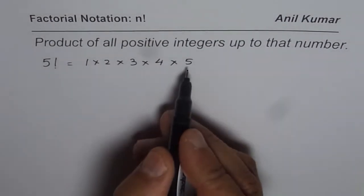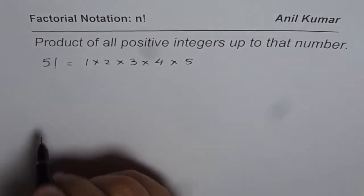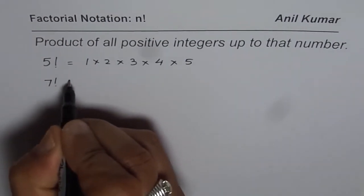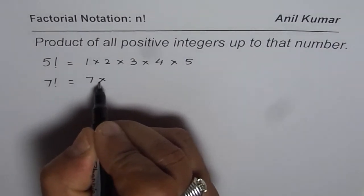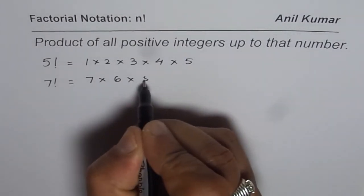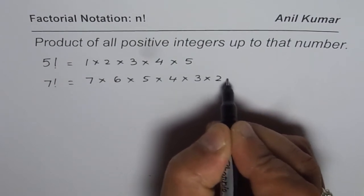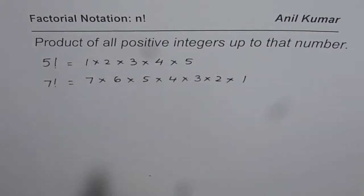Well, you could write in the reverse order also. For example, if I want to find what is 7 factorial, you could write like this: 7 times 6 times 5 times 4 times 3 times 2 times 1. So that becomes 7 factorial.